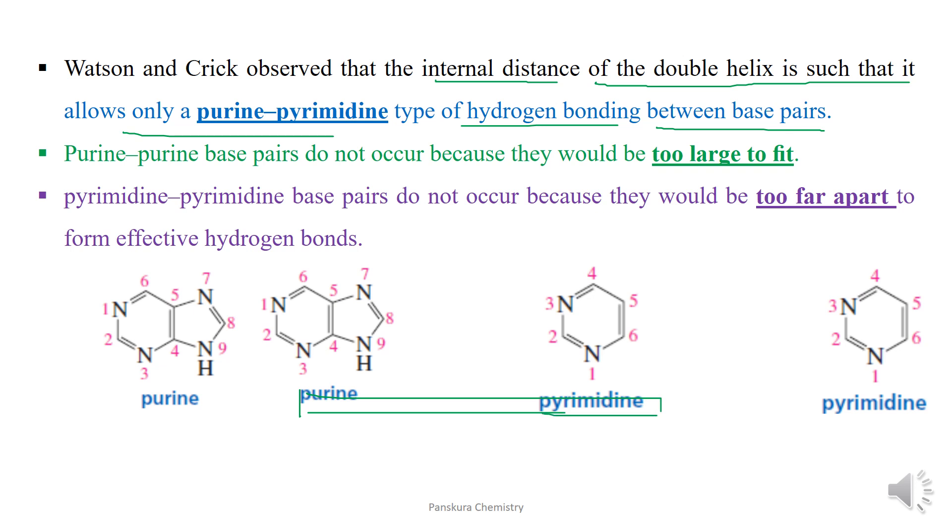Why not? Purine-purine base pairs do not occur because they would be too large to fit. Pyrimidine-pyrimidine base pairs do not occur because they would be too far apart to form effective hydrogen bonds.